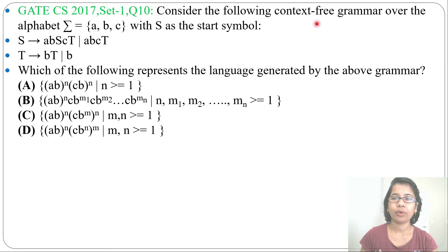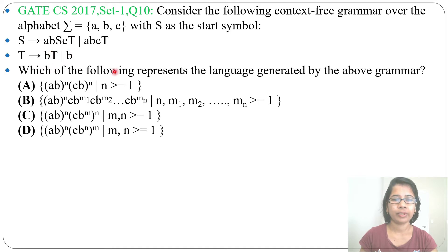Consider the following context free grammar over the alphabet {A, B, C} with S as the start symbol. S derives ABC,T or ABC,T. From T you can derive B,T or B. Which of the following represents the language generated by the above grammar? Four options are given, and it is asking which language can be generated by this grammar.